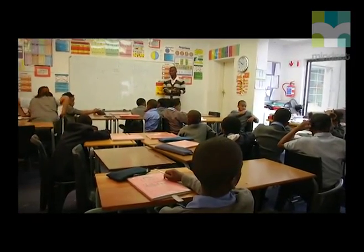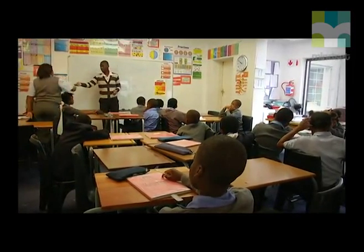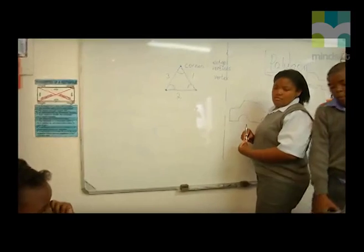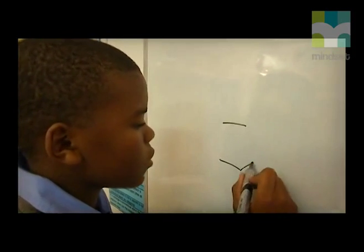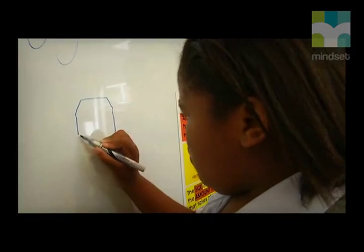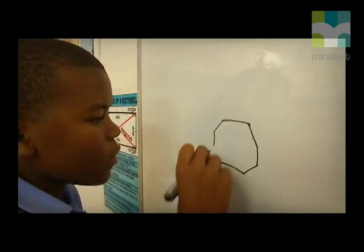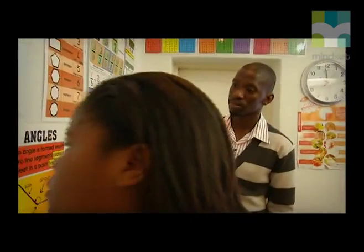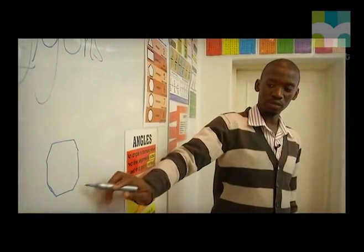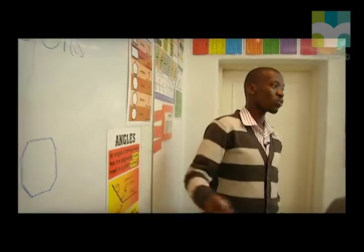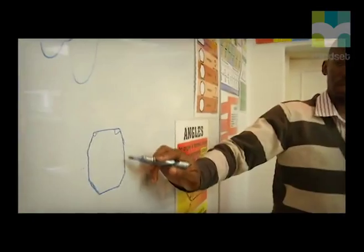Now what I want from you is for two of you to come to the board and draw an octagon. The learners we chose to come to the board — first, learners need to have an incentive; everyone wants to be at the front. We chose them to give opportunity to those who may have lacked confidence in previous lessons, to encourage and empower them. We also chose them because they prefer doing things on the board. Let's look at what these two shapes have got: one, two, three, four, five, six, seven, eight sides.